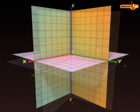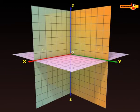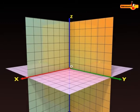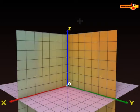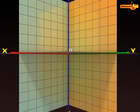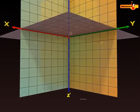Let us now see the nature of signs of the distances measured along these planes. The distance measured from the XY plane upwards in the direction of OZ is taken as positive, and downward in the direction of OZ' is taken as negative.